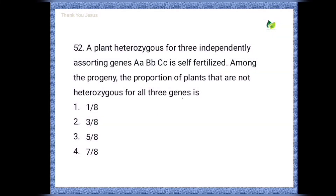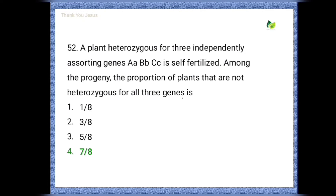A plant heterozygous for three independently assorting genes AaBbCc is self-fertilized. Among the progeny, the proportion of plants that are not heterozygous for all three genes — options are 1/8, 3/8, 5/8, 7/8 — the correct option is 7/8.